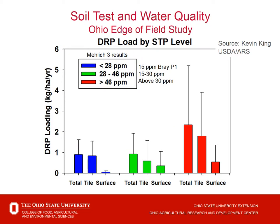Here's an example from work by Kevin King from the edge-of-field studies from the first couple of years of sampling. He segmented out the low, medium, and high soil test fields. Blue represents the low soil testing fields — testing less than 28 parts per million on Mehlich 3 or less than 15 parts per million on Bray P1. Green in the middle is the maintenance range: 28 to 46 on Mehlich 3 and 15 to 30 parts per million on Bray P1. Greater than 46 parts per million Mehlich 3 or above 30 parts per million Bray P1 is above the agronomic level where we suggest drawdown applications. At those high levels we do see greater loss — maybe double and triple the loss compared to lower soil test phosphorus fields.